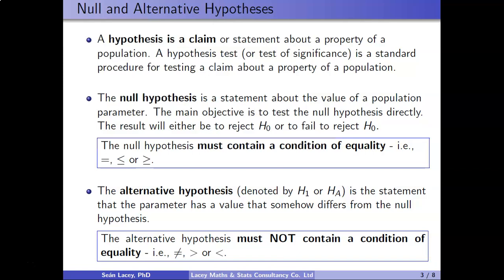That idea of 'not guilty' maps to 'fail to reject the null hypothesis' in statistics. Failing to reject could mean the null hypothesis is correct, or equally that you feel it's incorrect but don't have enough information — essentially your sample size isn't big enough — to reject it. You might then go off, gather more data, and repeat the analysis, at which point you could end up rejecting the null hypothesis. How much more data you'd need is where you'd go down the route of a power analysis.